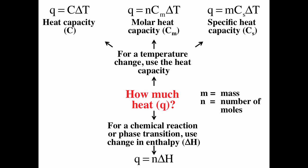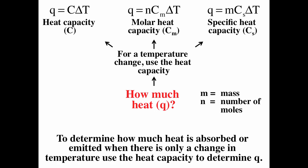If we have just a change in temperature, then we use heat capacity. Heat capacity can be defined for an object, symbolized with just C, or the molar heat capacity — heat capacity per mole — symbolized with C subscript M, or specific heat capacity — heat capacity per gram — symbolized with C subscript S. Heat capacity is the ratio of heat transfer compared to the change in temperature.